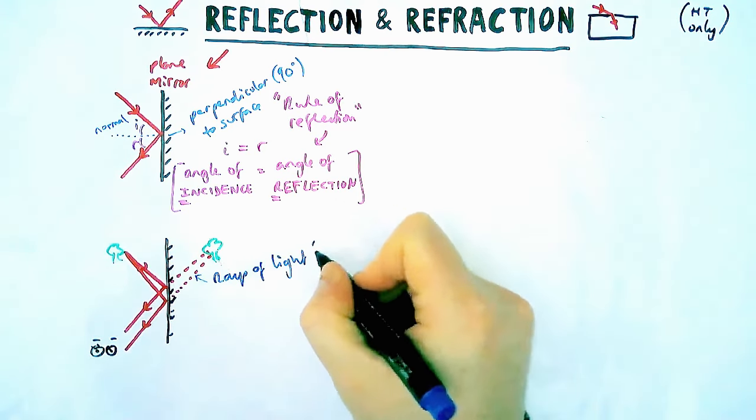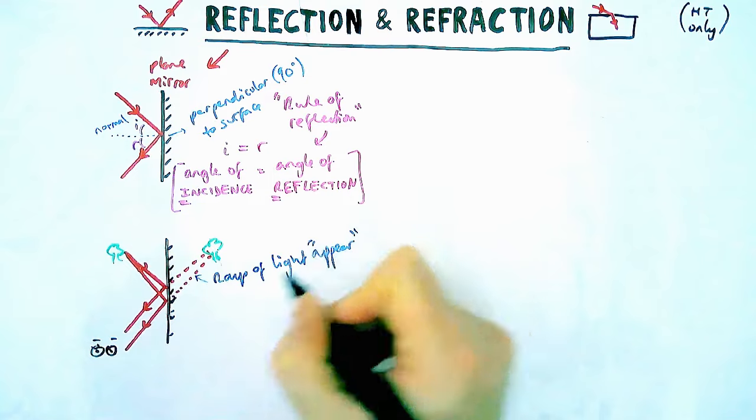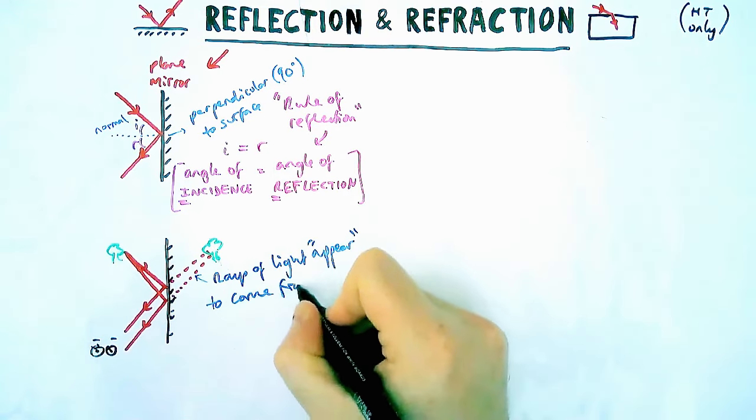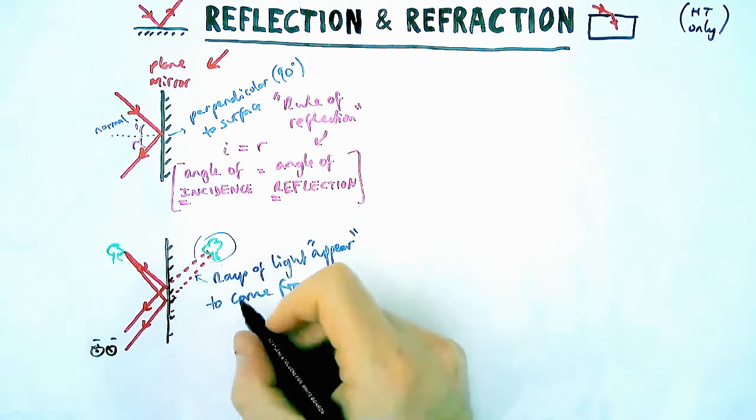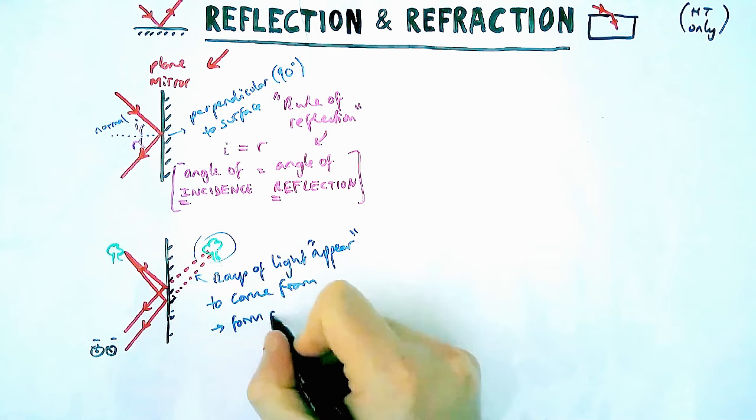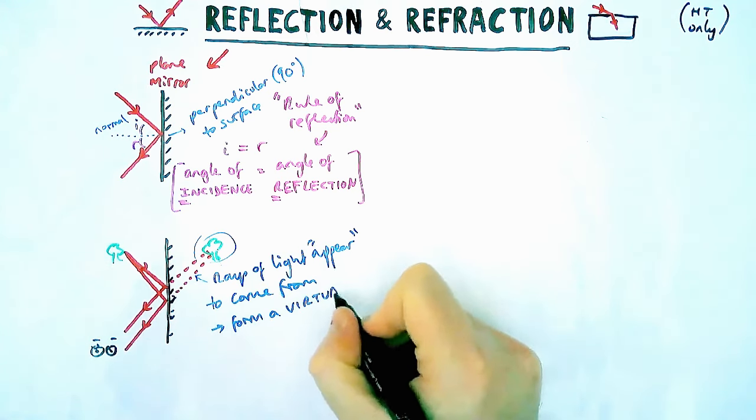So this is where the rays of light appear to come from, and this describes this tree as what we call a virtual image. Virtual, just like virtual reality, means it's not really there but your brain kind of tricks yourself into thinking it is there.